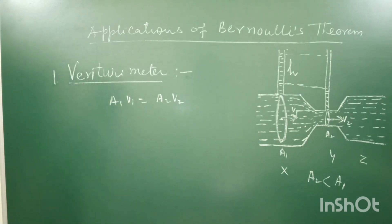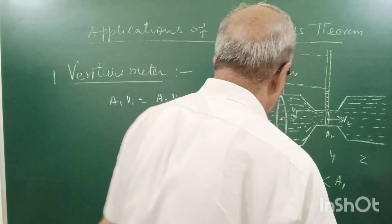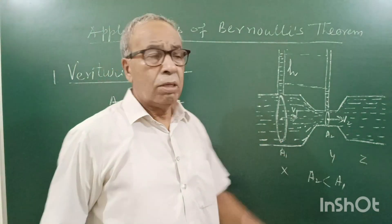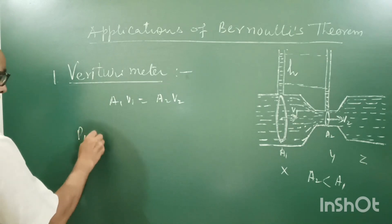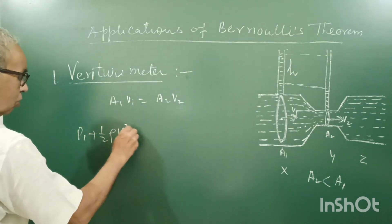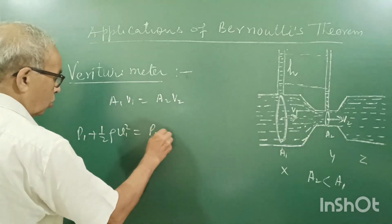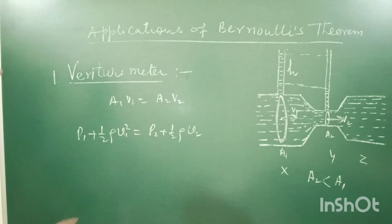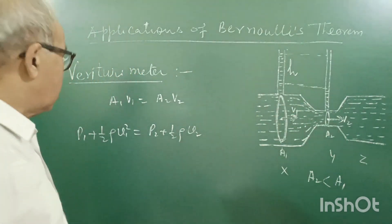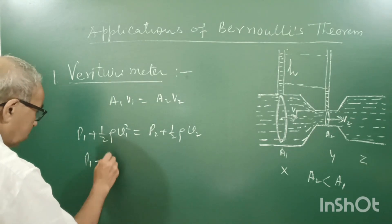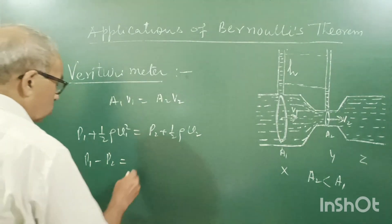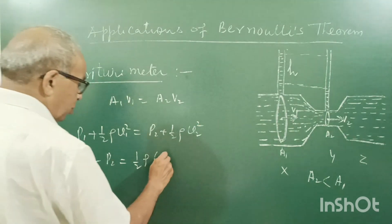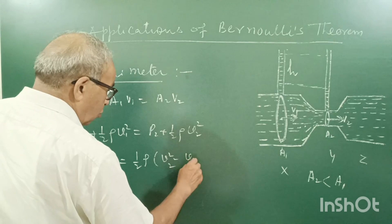Now, if we apply Bernoulli's theorem at these two areas, then we can write, since the pipe is horizontal, P1 plus half rho V1 square equal to P2 plus half rho V2 square. Rho is the density of liquid flowing through the venturimeter. So, we can write P1 minus P2 equal to half rho, V2 square minus V1 square.